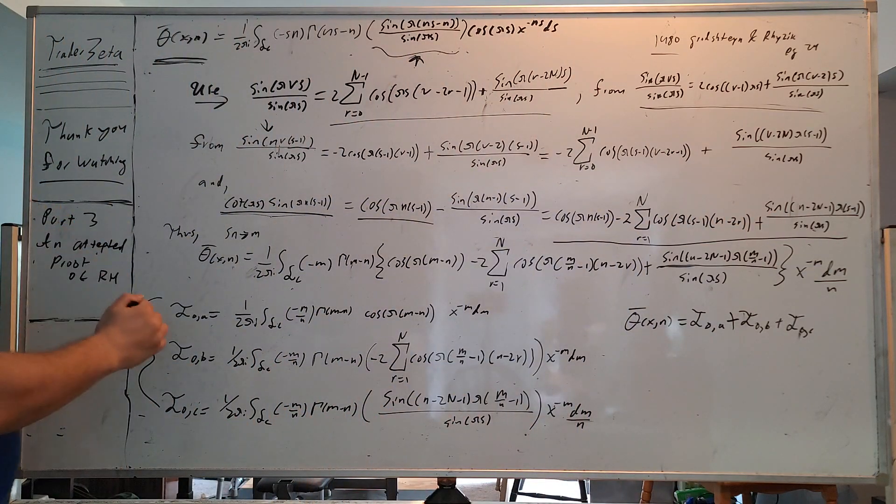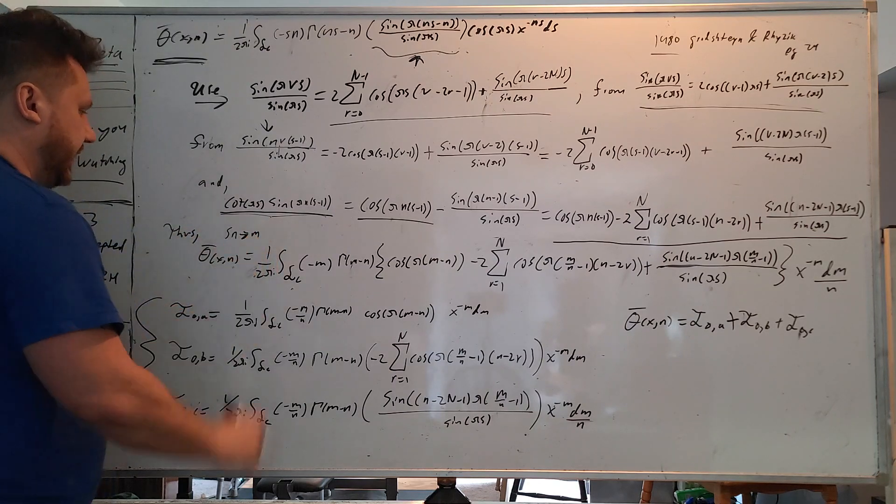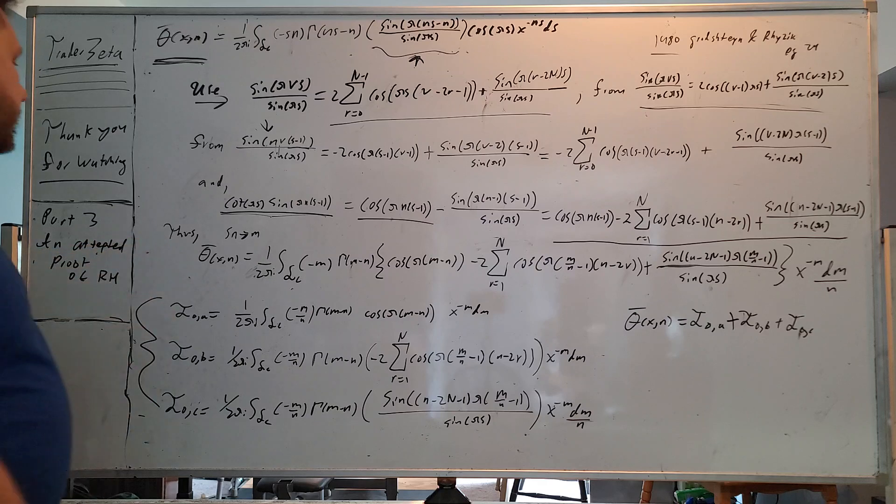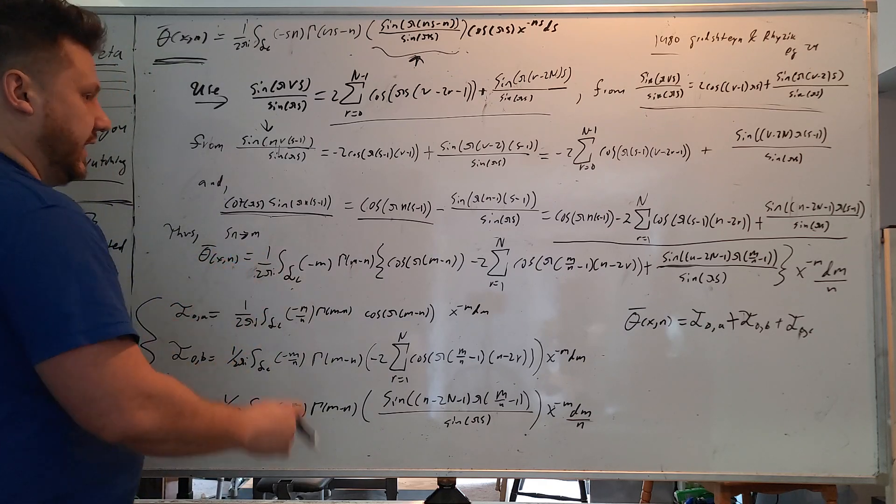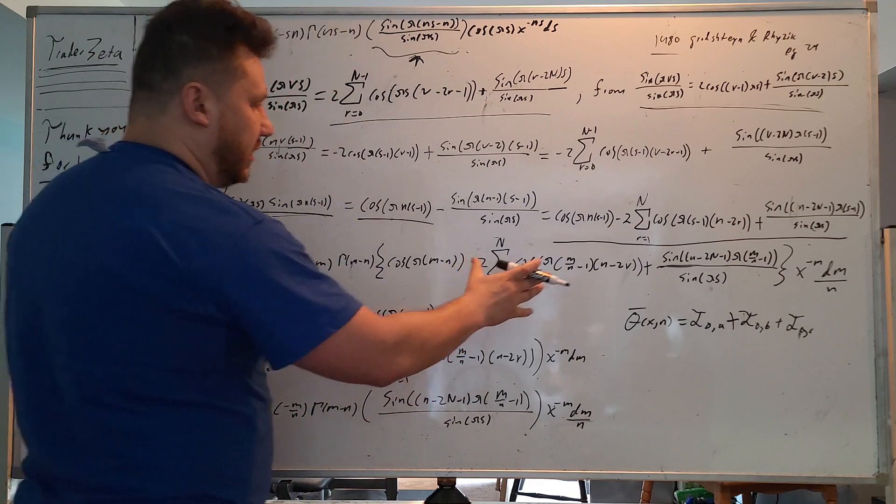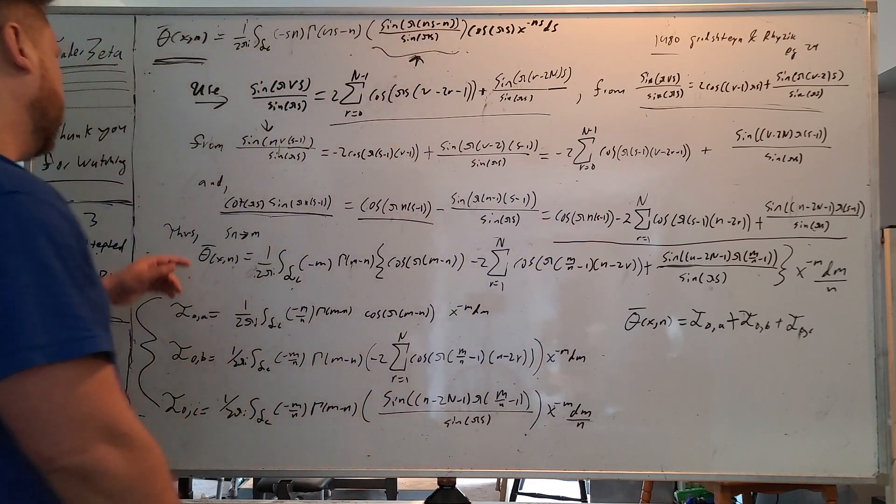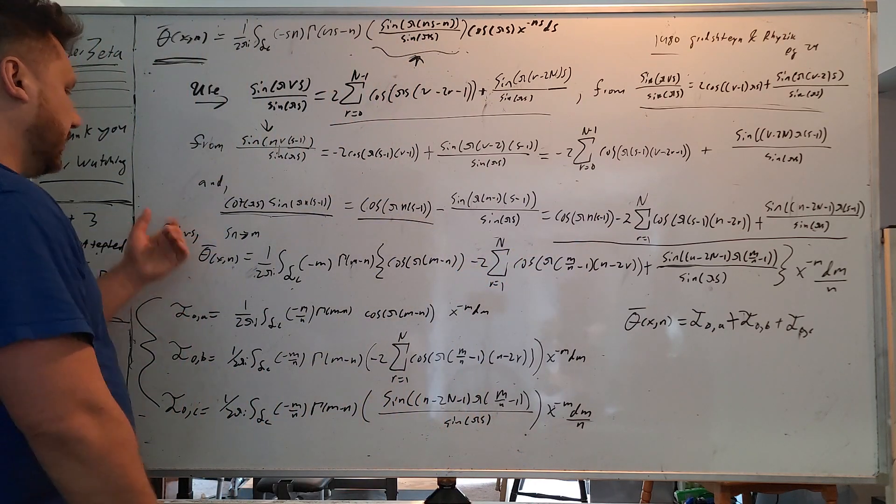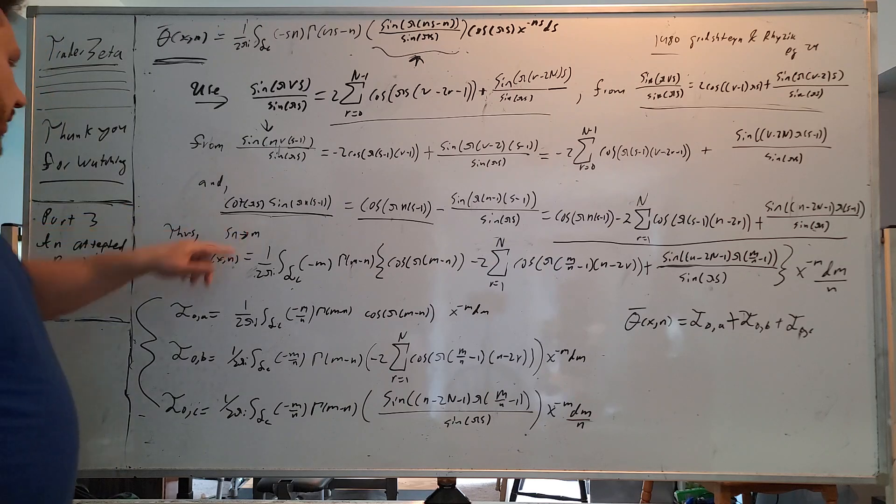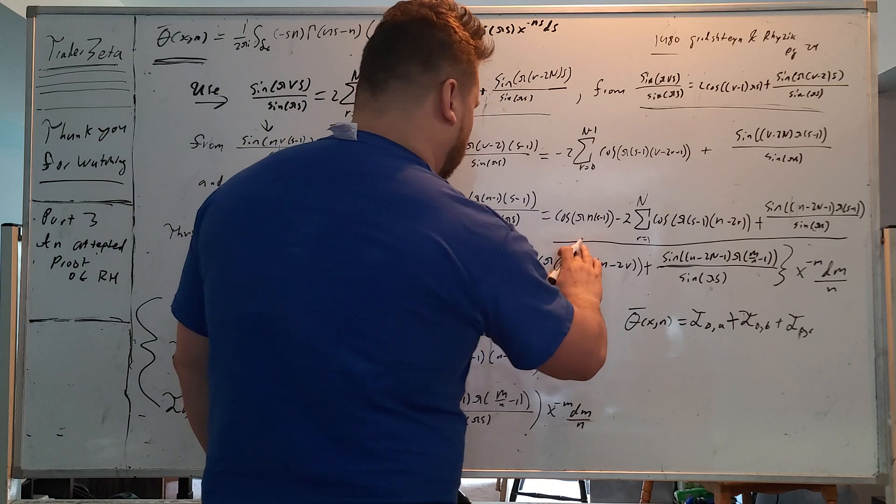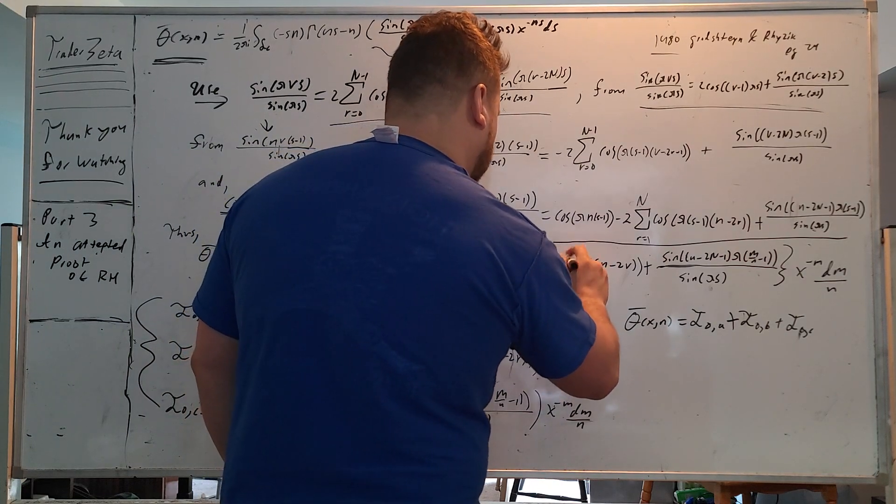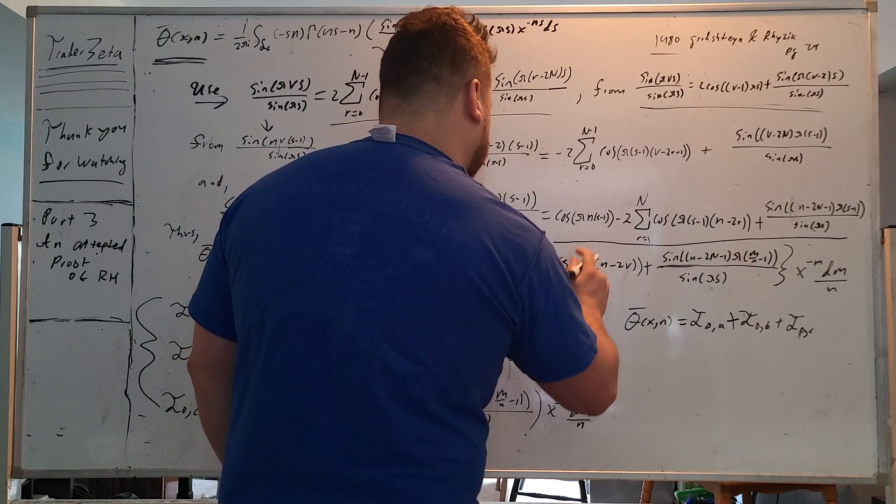So now we have sn goes to m, and this is going to be our theta bar of xn. So we can plug in our sum and everywhere we see s, we can substitute or at least solve for m. So this was, for example, an s. This was an s.